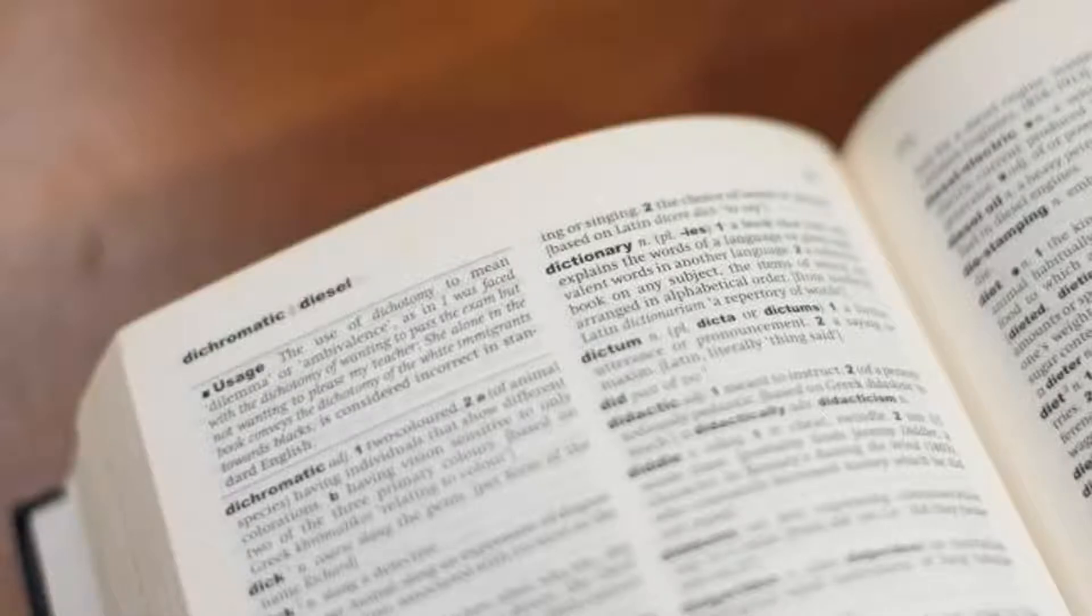Dreich has beaten Braw, Glakit and Scunnered to be named as the most iconic Scots word by the Scottish Book Trust. It received 259 of the 1,895 votes cast in a poll as part of Book Week Scotland, which was run with the hope of prompting discussion around well-loved and well-used words.